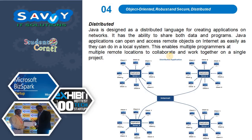Distributed: Java is designed as a distributed language for creating applications on networks. It has the ability to share both data and programs. Java applications can open and access remote objects on the internet as easily as they can do on a local system. This enables multiple programmers at multiple remote locations to collaborate and work together on a single project.